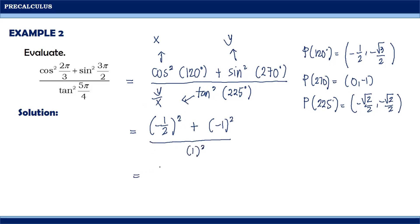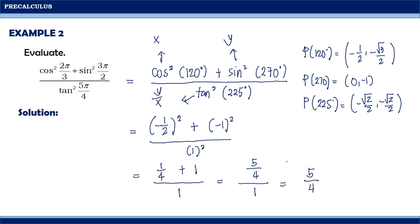Simplifying: (−1/2)² = 1/4, (−1)² = 1, and 1² = 1. So we have (1/4 + 1) / 1 = 5/4 / 1. Therefore, the given expression has a value of 5/4.